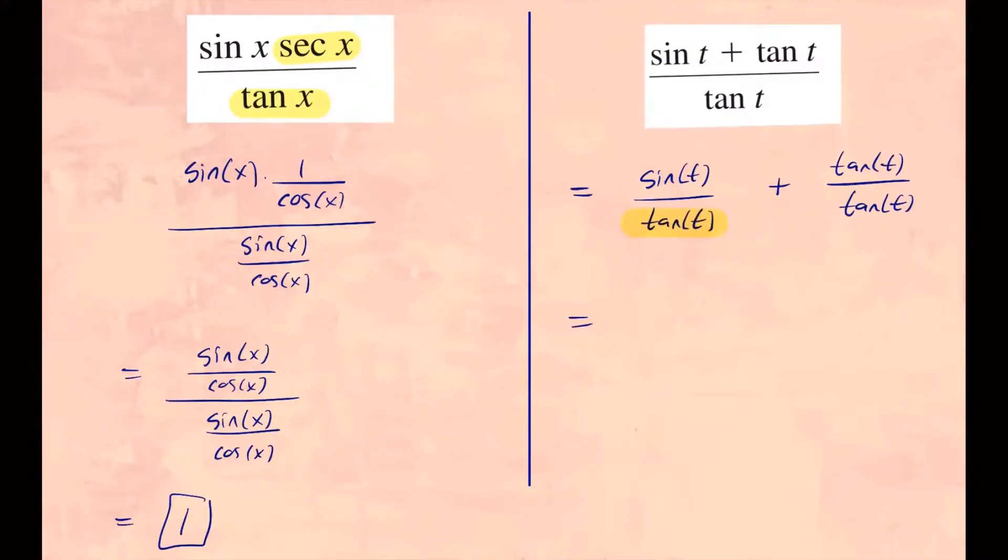Well, same thing top and bottom. That's equivalent to 1. So we have sine t over tangent is sine over cosine.